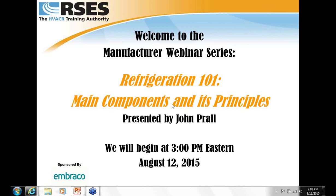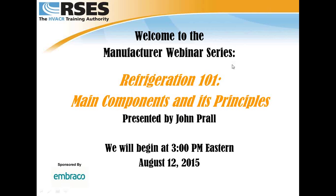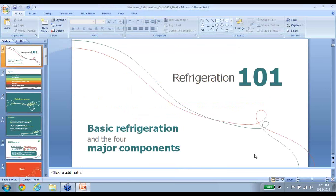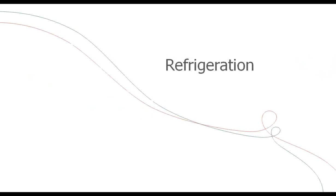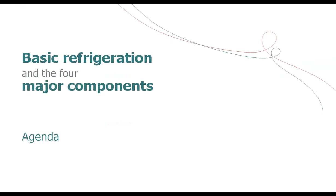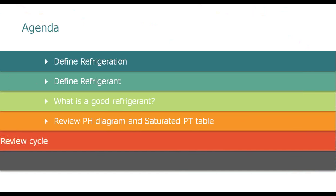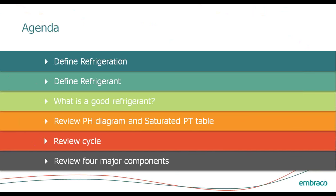Hi, welcome to the Refrigeration 101 webinar covering basic refrigeration and the four major components. In today's webinar, we're first going to define what refrigeration is, define a refrigerant, cover what makes up a good refrigerant, review some of the pH diagrams and saturated PT tables and understand how that can help you in sizing components and designing your system, review the cycle, and review the four major components in the system.